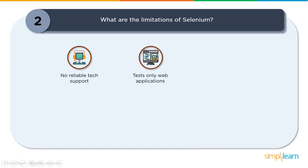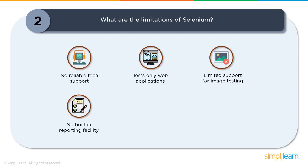The second limitation: Selenium can test only web applications. It cannot handle Windows GUI or non-HTML pop-ups. The workaround is integrating AutoIt for Windows-based activity. Selenium also cannot automate mobile applications, but it can integrate with Appium, a mobile automation tool. Third limitation: limited support for image testing. The standard API interacts only with the browser. Sikuli is a good tool for image testing and can be integrated with Selenium.